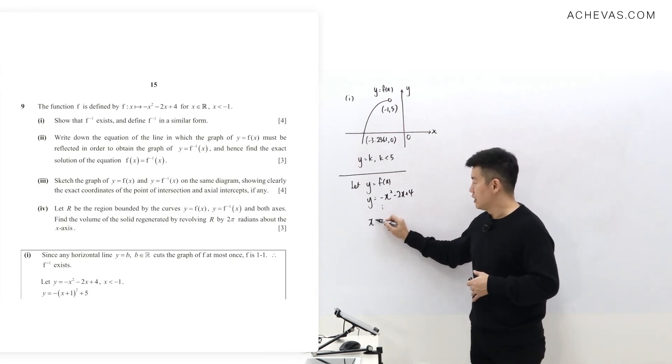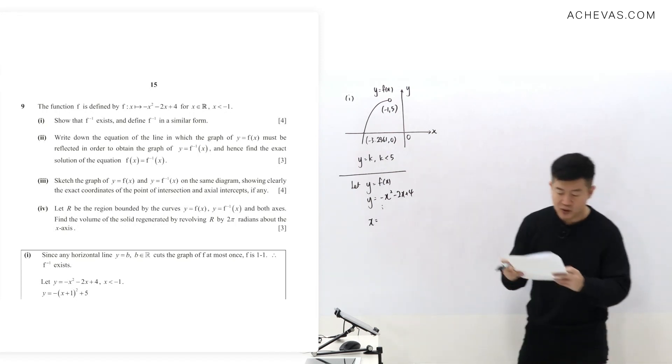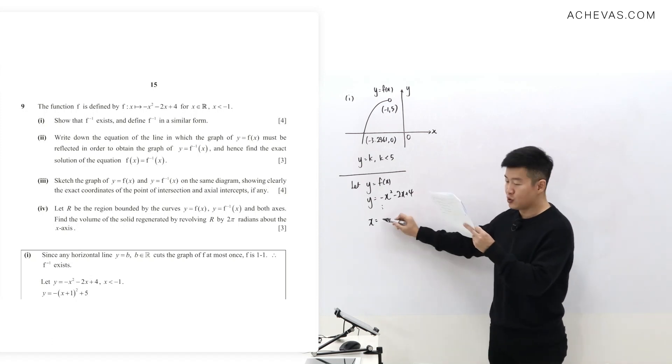I'll end up with x after I do completing the square or using the quadratic formula. I'm going to end up with x equals negative 1 plus or minus square root of 5 minus y.